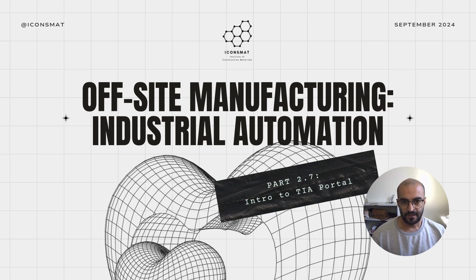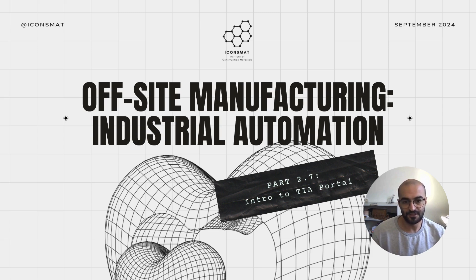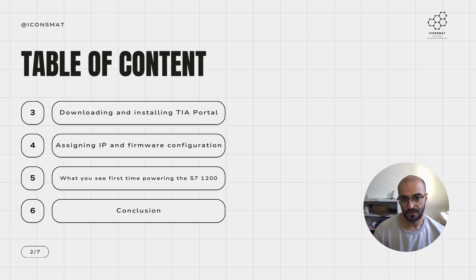Hey guys, we are back again for Part 2.7 of off-site manufacturing industrial automation about how to set up your Siemens S7-1200 — that's your PLC, programmable logic controller. Particularly, we are going to emphasize on an example for conveyor belt systems. So in this part, Part 2.7, this is an introduction for TIA Portal and what you can expect to receive.